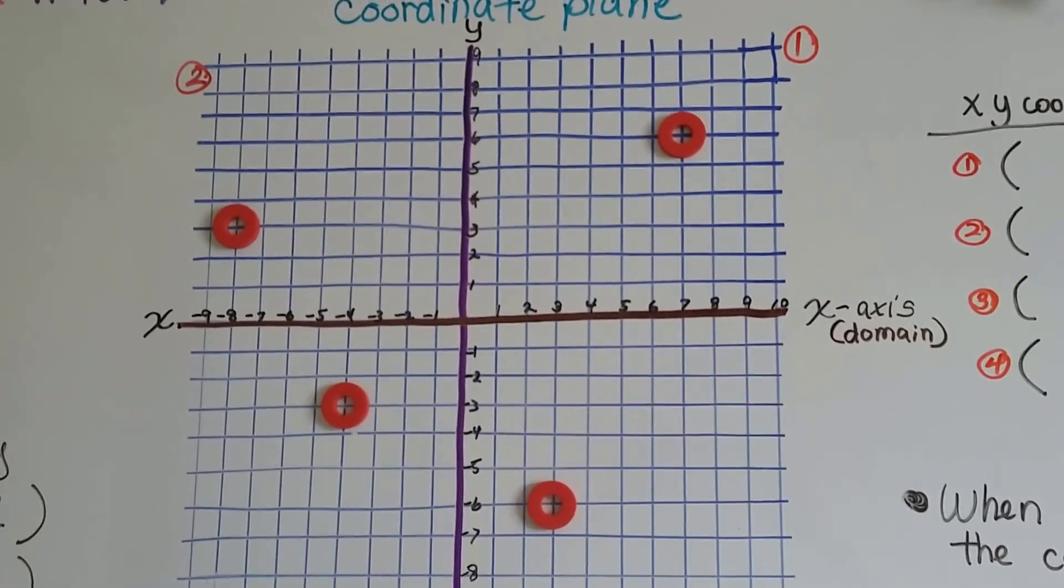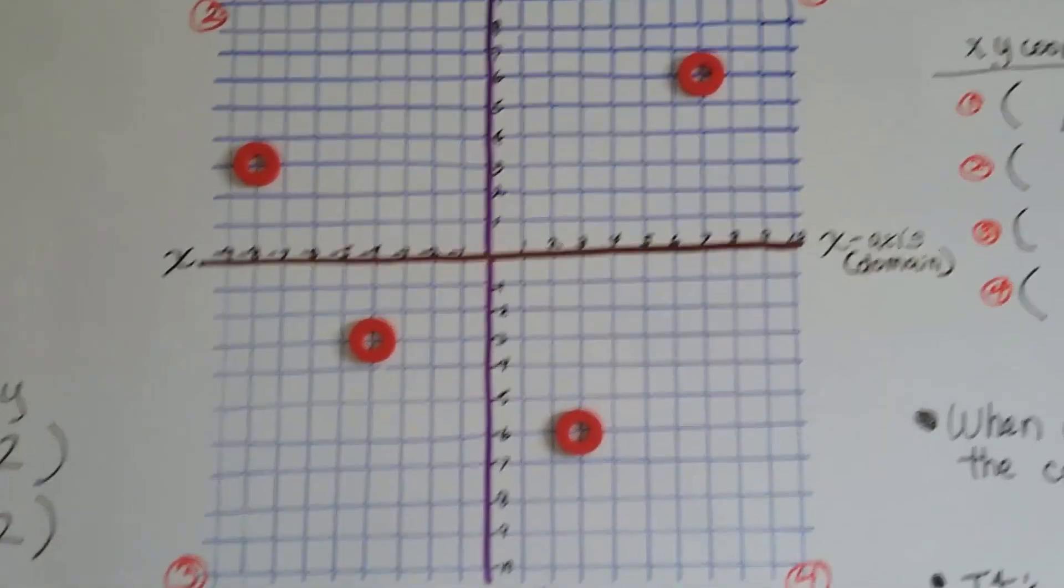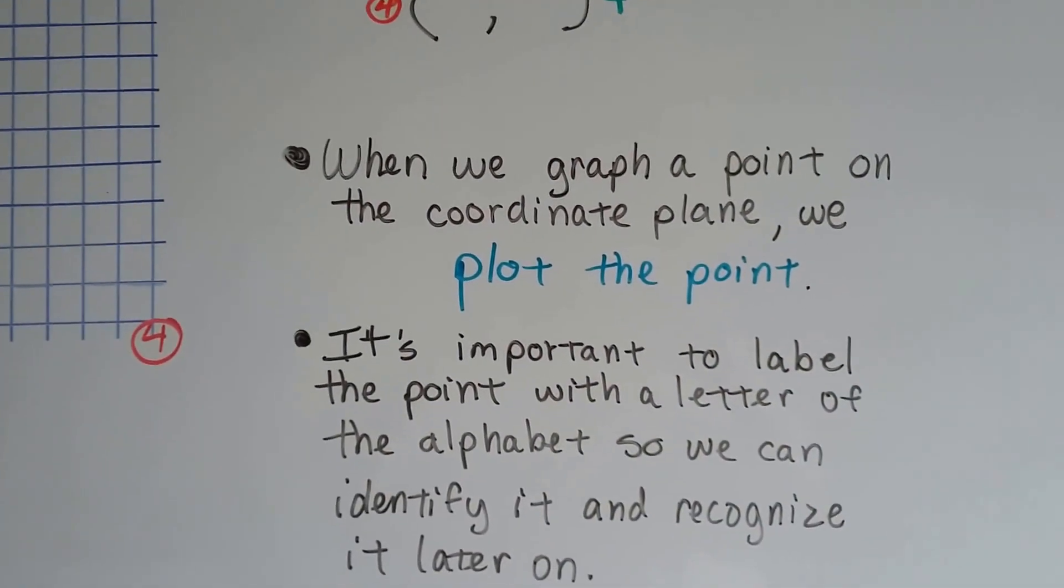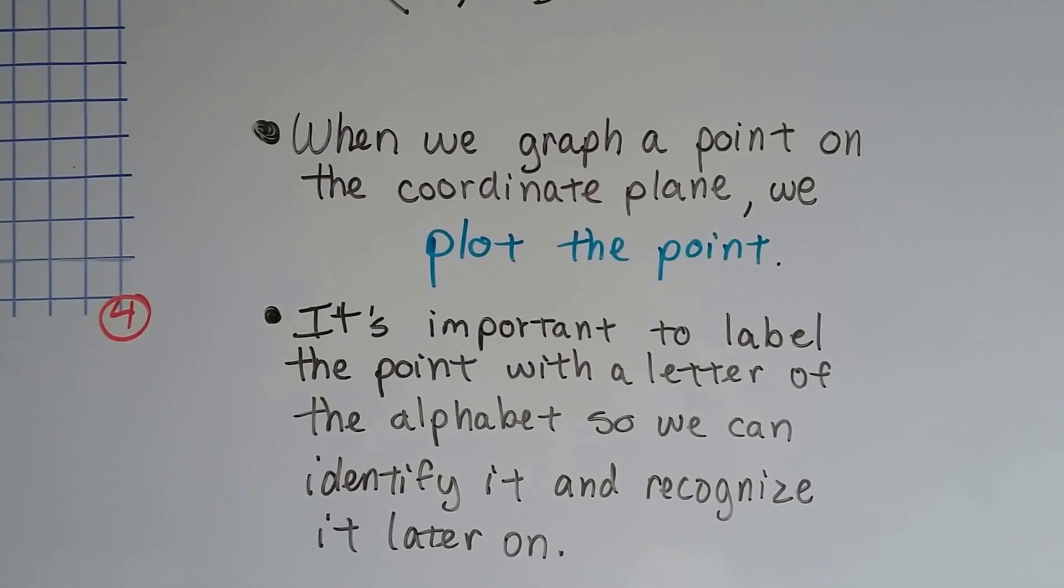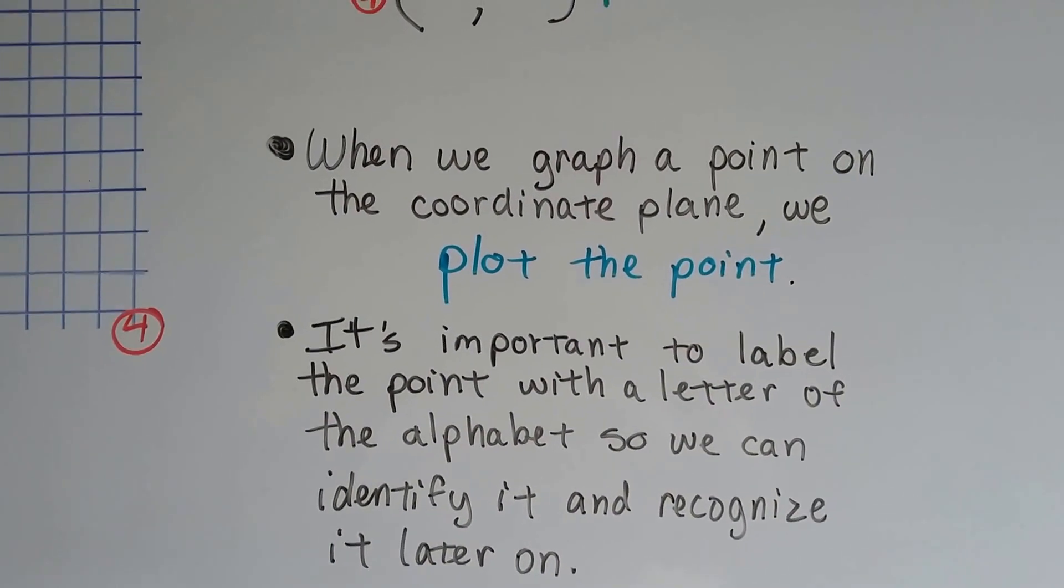This is a coordinate plane and we're actually going to plot some points on this plane. When we graph a point on the coordinate plane, we plot the point. It's important to label the point with a letter of the alphabet so we can identify it and recognize it later on.